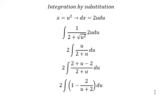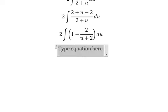Now we integrate. The integral of 1 is u, and the integral of 2 over (u+2) gives us 2 natural log of absolute value u+2.